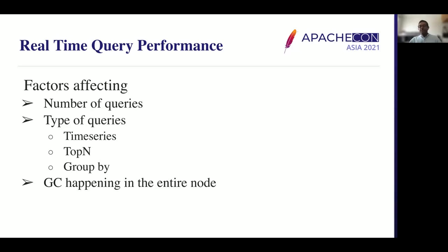Even if the number of queries remains the same, the type of queries can change. For example, time series queries have lower resource utilization compared to other query types. Then comes TopN, then GroupBy. Sometimes the real-time node ingests a lot of data up to its max capacity, causing a lot of objects to be created. If there is not enough memory, excessive GC will happen in that node, ultimately causing poor performance.